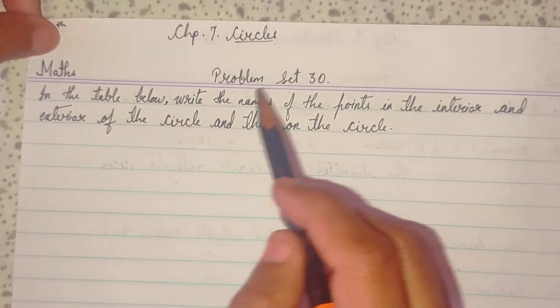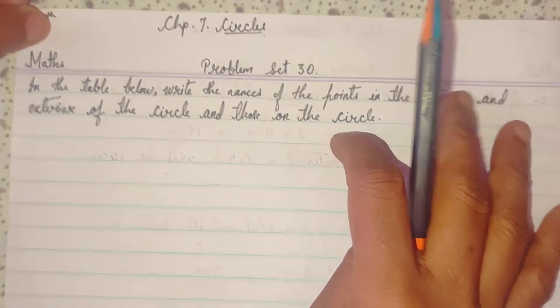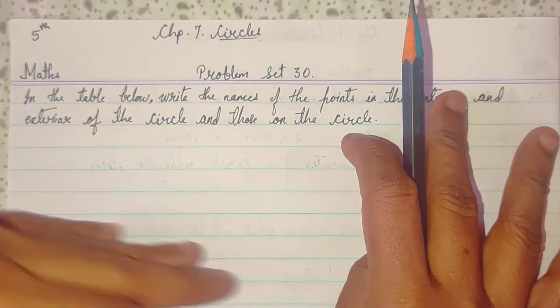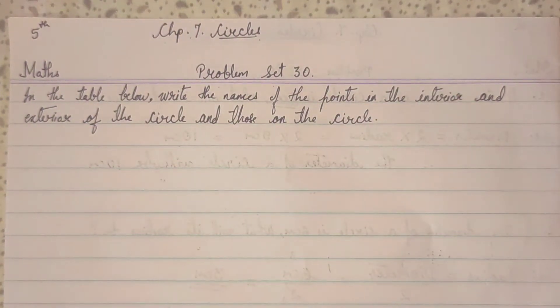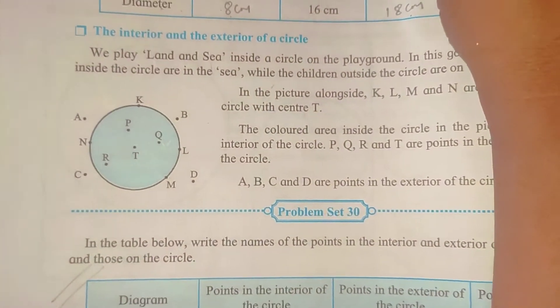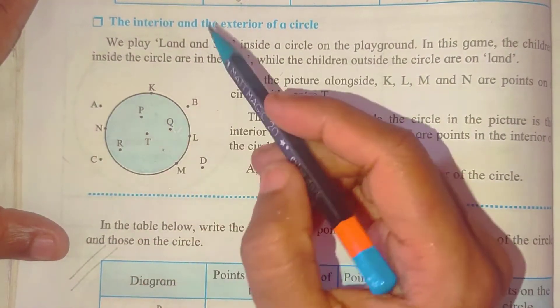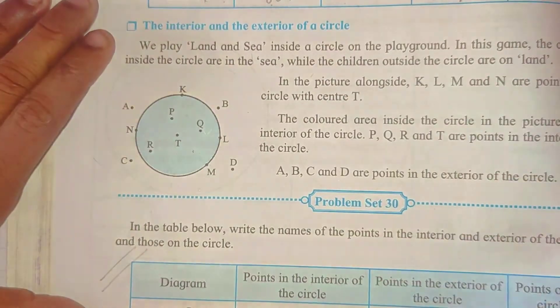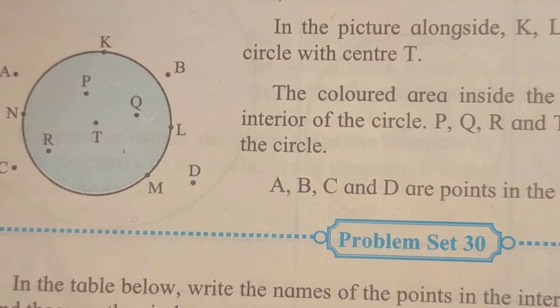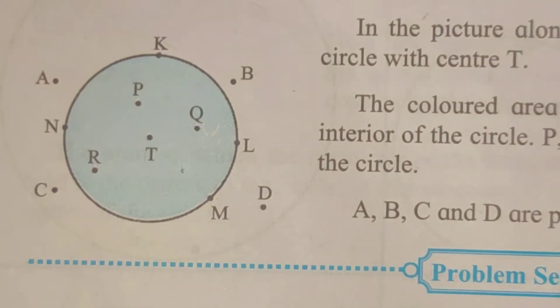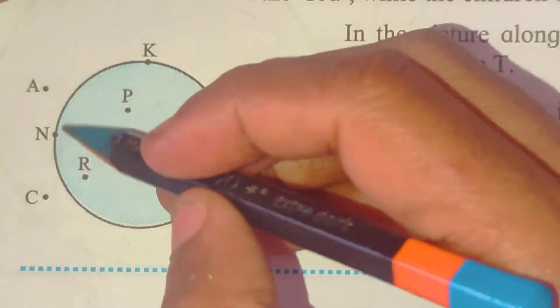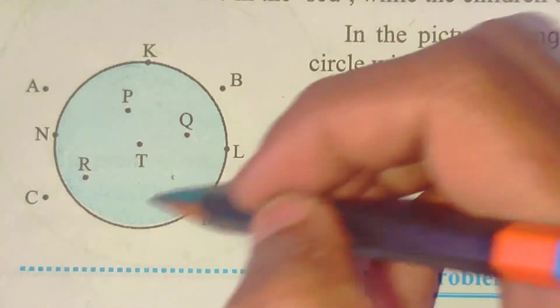In the table below, before we solve this, we have to learn something which is given in your textbook. In your textbook, on page number 44, this example they have given. If you look at this circle, see, here is the drawing, this is the inside part.